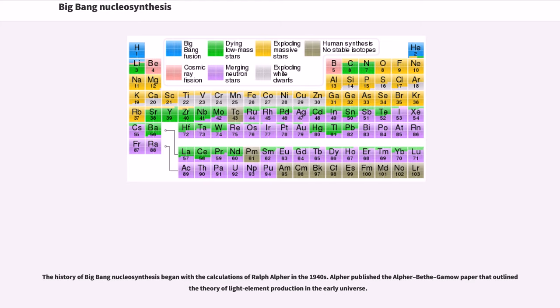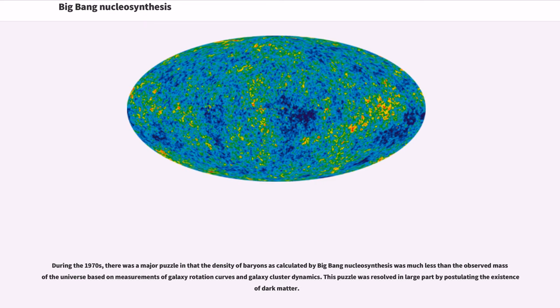The history of Big Bang nucleosynthesis began with the calculations of Ralph Alpher in the 1940s. Alpher published the Alpher-Bethe-Gamow paper that outlined theory of light element production in the early universe. During the 1970s, there was a major puzzle in that the density of baryons as calculated by Big Bang nucleosynthesis was much less than the observed mass of the universe based on measurements of galaxy rotation curves and galaxy cluster dynamics. This puzzle was resolved in large part by postulating the existence of dark matter.